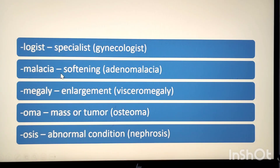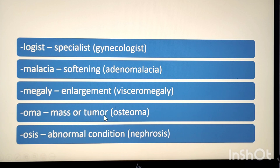The suffix -malacia means softening. Example: adenomalacia. Adeno means gland, so adenomalacia means softening of the gland. The suffix -megaly means enlargement. Example: visceromegaly. Viscero means internal organs, so visceromegaly means enlargement of the internal organs. The suffix -oma means mass or tumor. Example: osteoma. Osteo means bone, so osteoma means a tumor or mass of the bone.